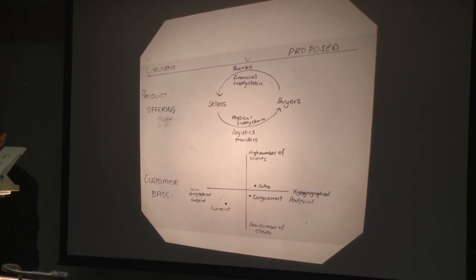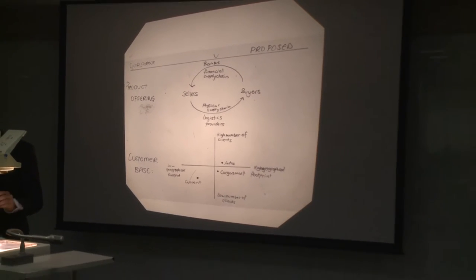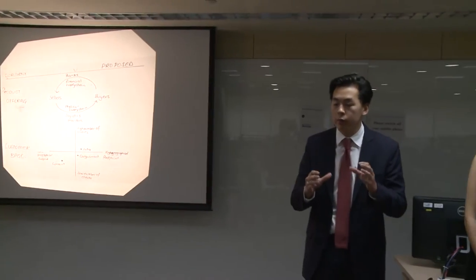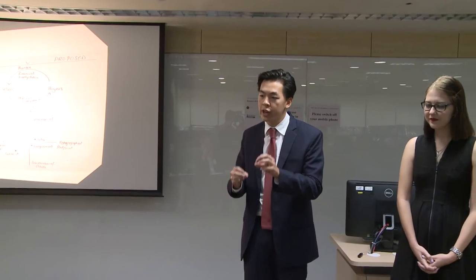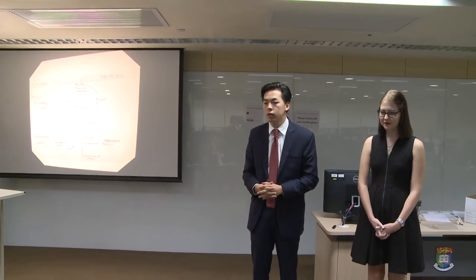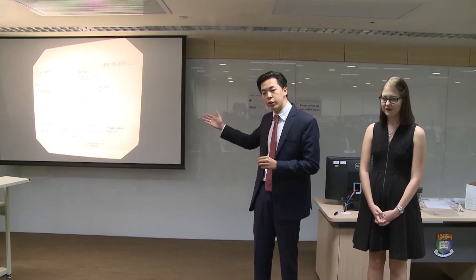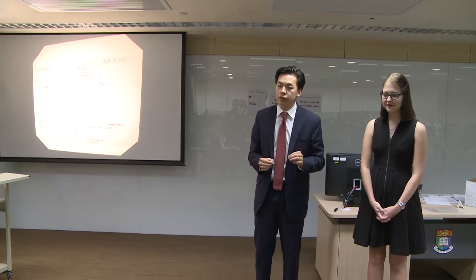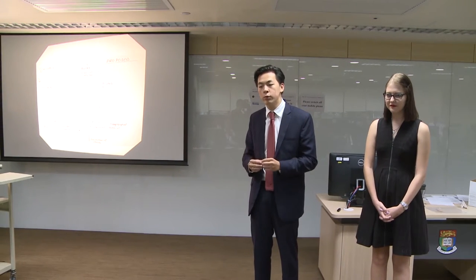Your product offering is represented by the graph at the top here. Through working with banks and logistics providers, you are able to provide a product that covers both a financial supply chain and a physical supply chain. Your customer base is represented by the graph at the bottom.